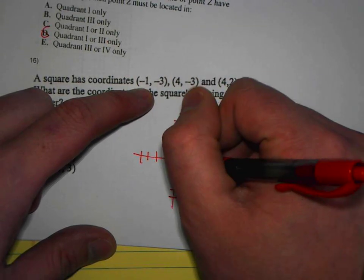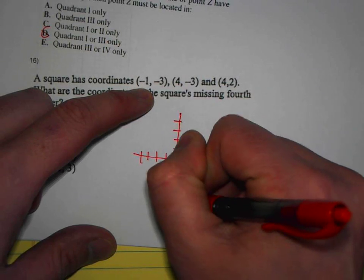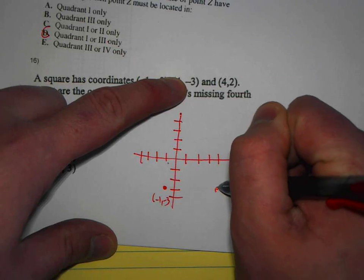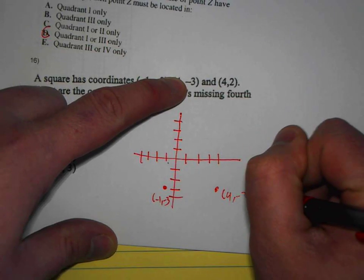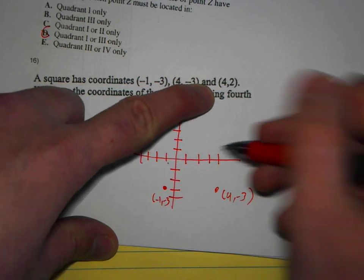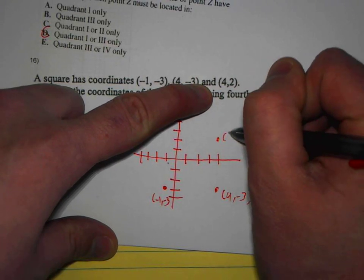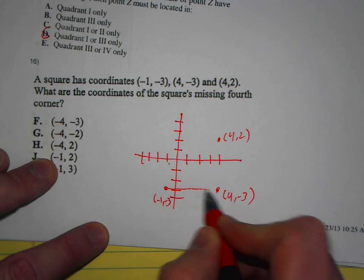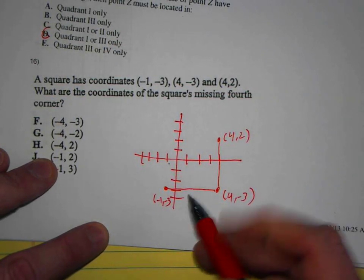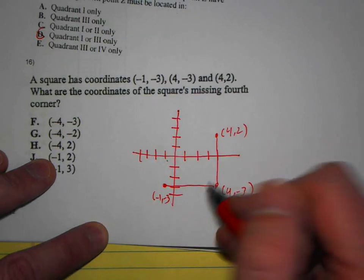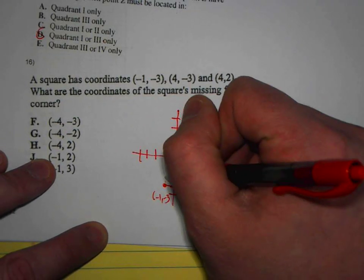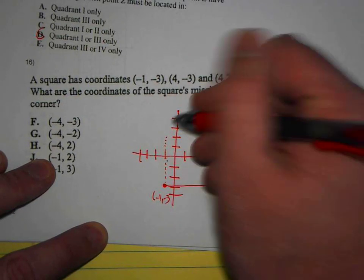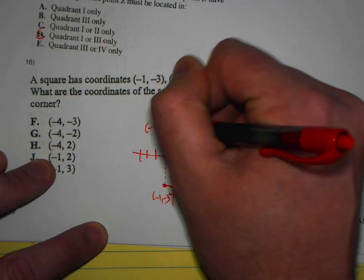Negative 1, negative 3 will be down there. 4, negative 3 will be down there. 4, 2 will be up there. And it's a square, so where would that other one have to be? Negative 1, positive 2 — yeah, it looks like it would be at negative 1, positive 2.